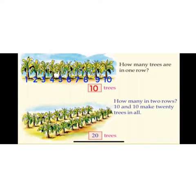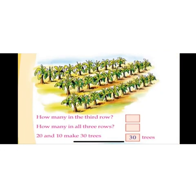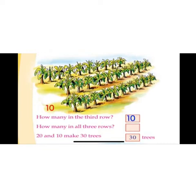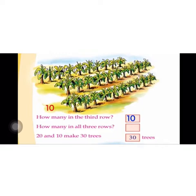How many in two rows? How many in the third row? Yes, ten. How many in all three rows? Yes, ten. How many in the first row? Ten. And the second row? Ten. Also the third row? Ten.